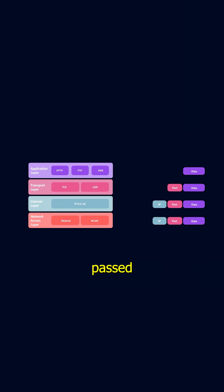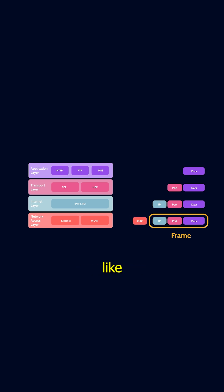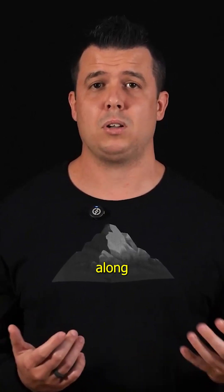At this point, the packet passed from the internet layer is wrapped in a new package called a frame. This frame includes a layer 2 header, which is crucial for local delivery. The layer 2 header contains the source MAC address — the unique address of your device, like the sender's return address — and the destination MAC address, the address of the next device along the way or the router.